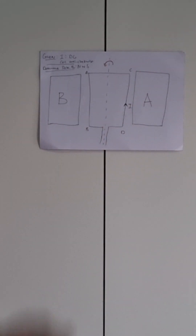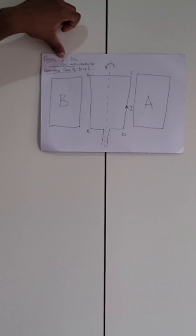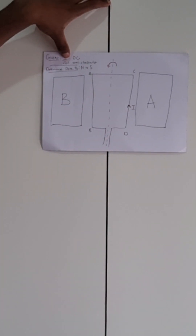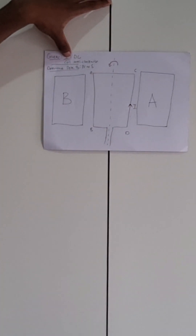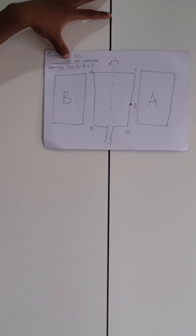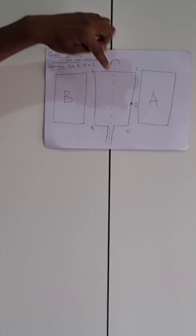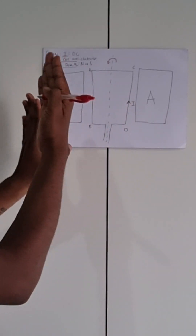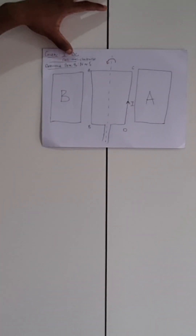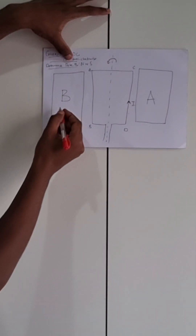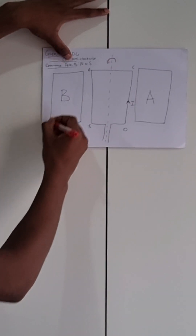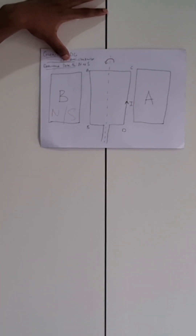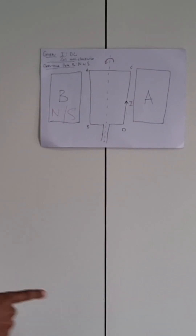We are given the direction of the current — I'll show it on the diagram. We are also given the direction of the coil, which is moving anti-clockwise. We need to determine whether pole B is a north or south pole. That's the problem.